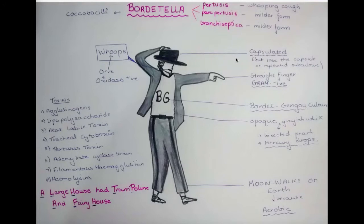Michael Jackson is going to take his hat off because his hand is over his hat, meaning that Bordetella lose the capsule on repeated subculture. The straight finger, which kind of looks like a negative sign, shows that Bordetella are gram negative.